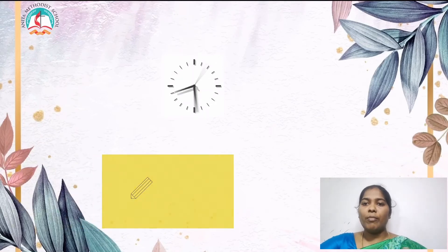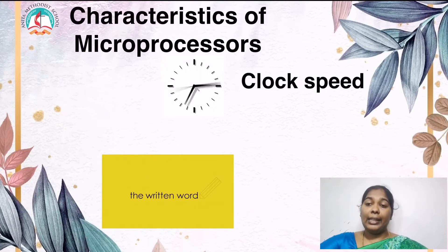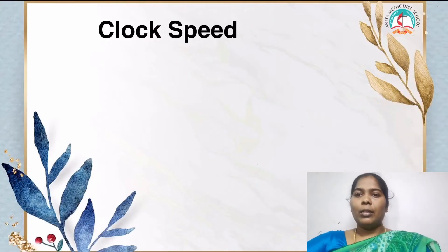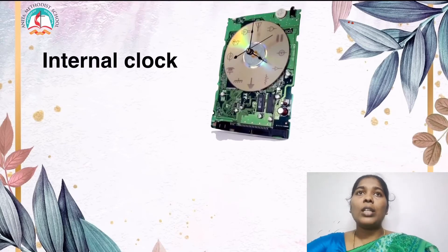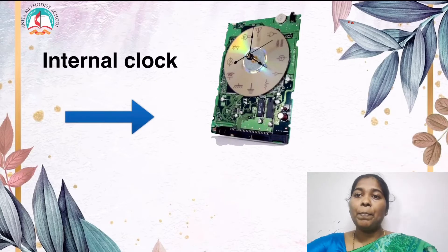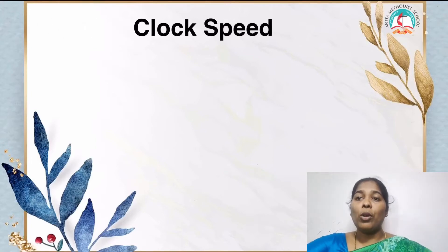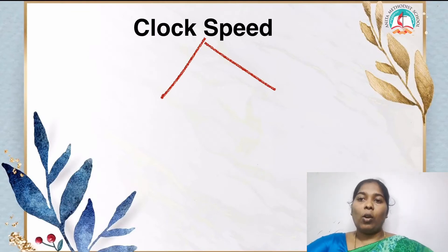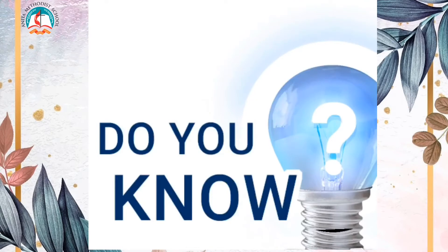We saw the basics of microprocessor. Next we are going to see some characteristics of the microprocessor: clock speed, instruction set, and word size. Every microprocessor has an internal clock that regulates the speed at which the system executes instructions. The speed at which the microprocessor executes instructions is called clock speed, and it can be measured in hertz.